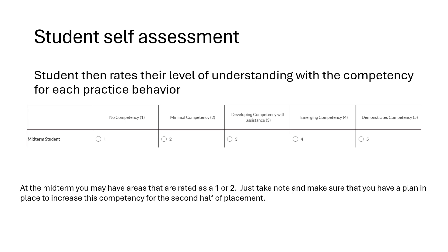Once the student has completed their ratings for their individual tasks — either not completed, partially completed, or fully completed — they must then also use the same scale discussed at the beginning to rate their own level of understanding with the competency for each individual practice behavior and competency. The student will rate as: no competency, minimal competency, developing, emerging, or demonstrates competency. For areas in which students have rated themselves as a 1 or 2, they must make note and ensure that they have a plan to increase this competency for the second half of their placement.